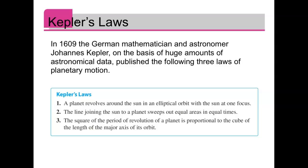So in 1609, Johannes Kepler, on the basis of huge amounts of astronomical data, published the following three laws of planetary motion. One, a planet revolves around the sun in an elliptical orbit with the sun at one focus.